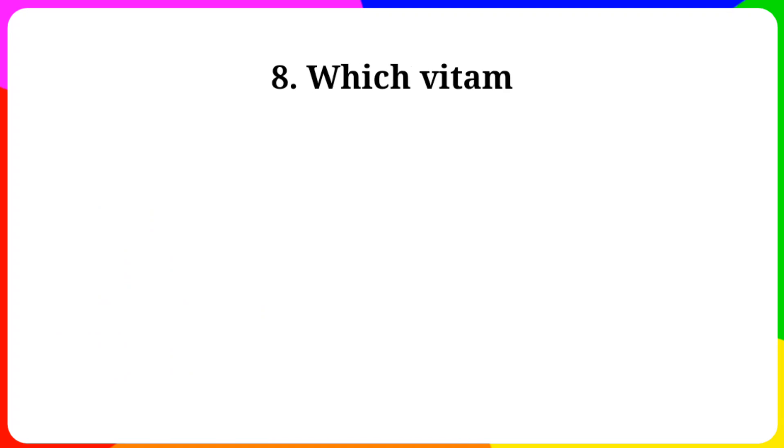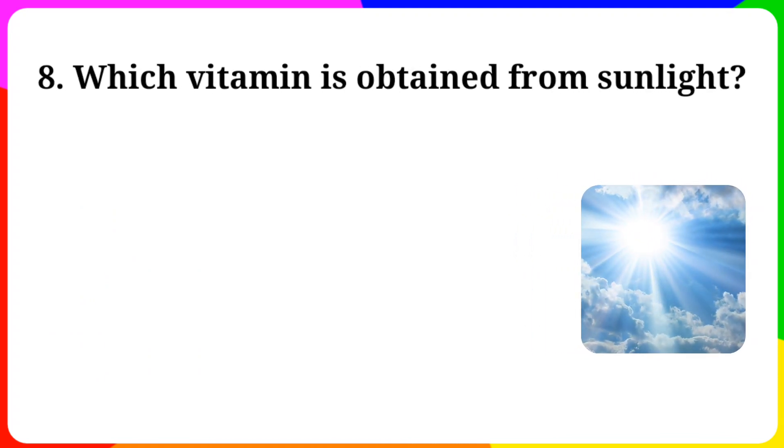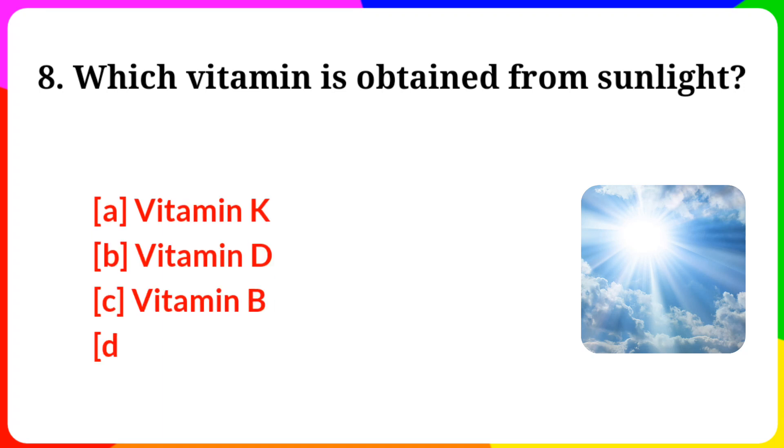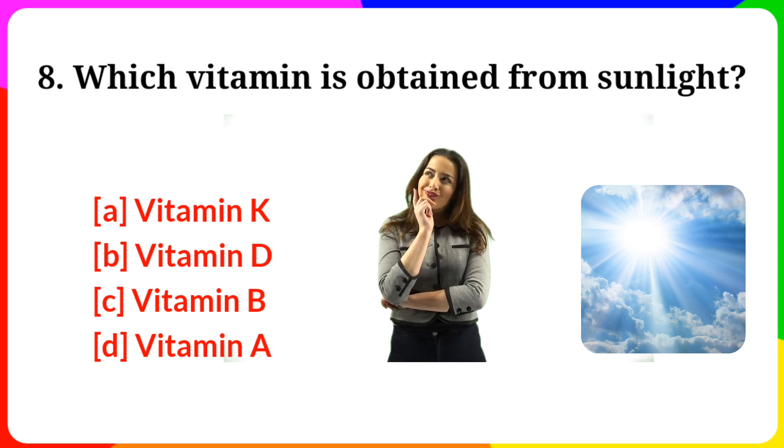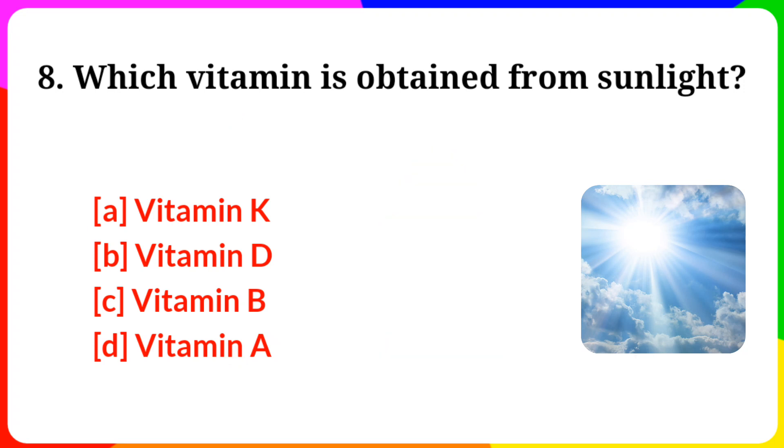Question number 8. Which vitamin is obtained from sunlight? Option A: Vitamin K. B: Vitamin D. C: Vitamin B. D: Vitamin A. Answer is option B, Vitamin D.